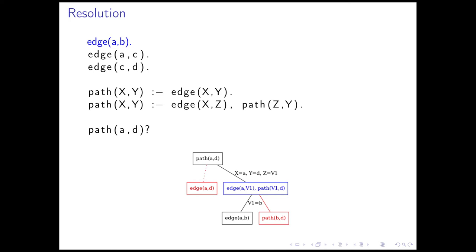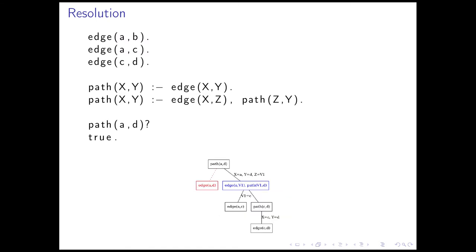We now have a sub-goal consisting of the body of the rule. We first consider the first literal of the body, edge A V1, and see that this can be solved if we set V1 to B because we have the fact edge AB in our program. But if we continue and try to solve path BD, we see that this does not work, so we need to go back and try again. We try again with setting V1 equals C. We see that edge AC is a fact and can be solved. And also path CD can be solved by using the first rule for paths with X and Y equals to C and D. We've constructed a proof tree for our goal path AD and can answer true.